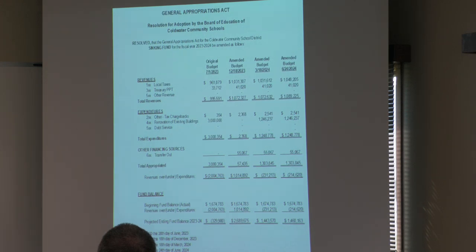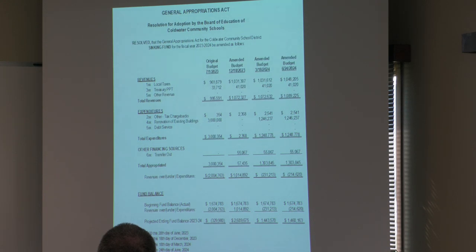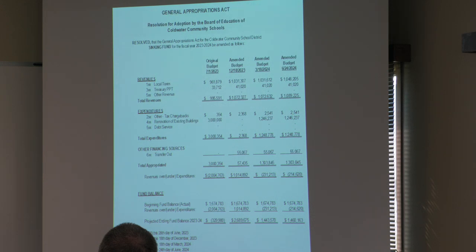For the sinking fund, it's mainly taxable values and expenses for different projects. This year we paid for half of the boiler project at the high school out of the sinking fund. There was also $55,067 going out to close out the old sinking fund, which moved to apply to the QZAB payment. The projected fund balance in the sinking fund is $1,460,163, to be used on projects foreseen in the next few years.